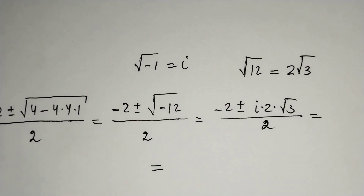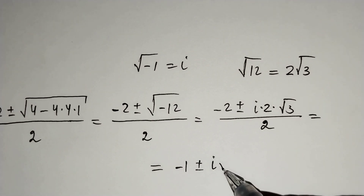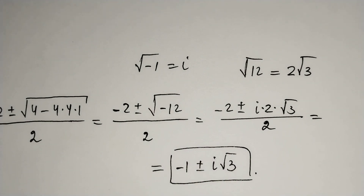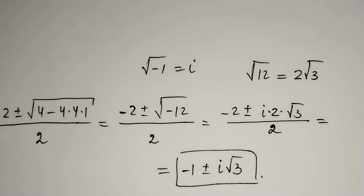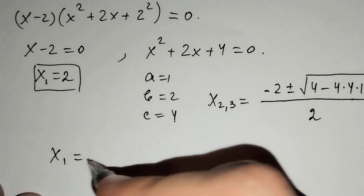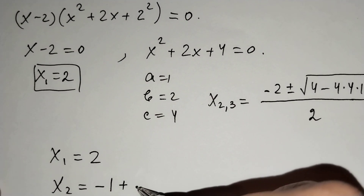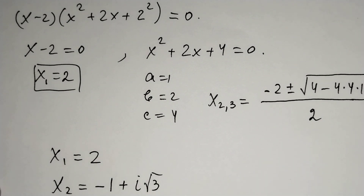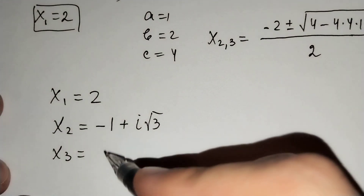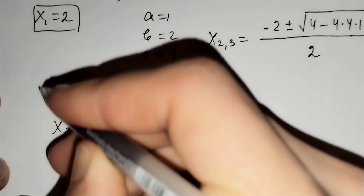This simplifies to minus 1 plus or minus i times the square root of 3. So x₂ equals to negative 1 plus i times the square root of 3, and x₃ equals to negative 1 minus i times the square root of 3.